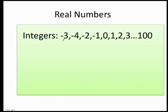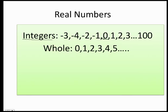Anytime you hear the word integer, you have to think about whole numbers that are negative and positive. For example: negative 3, negative 4, negative 2, negative 1, also the number zero is an integer, 1, 2, 3, and so on. An integer always has to be a whole number — positive, negative — and it includes zero.